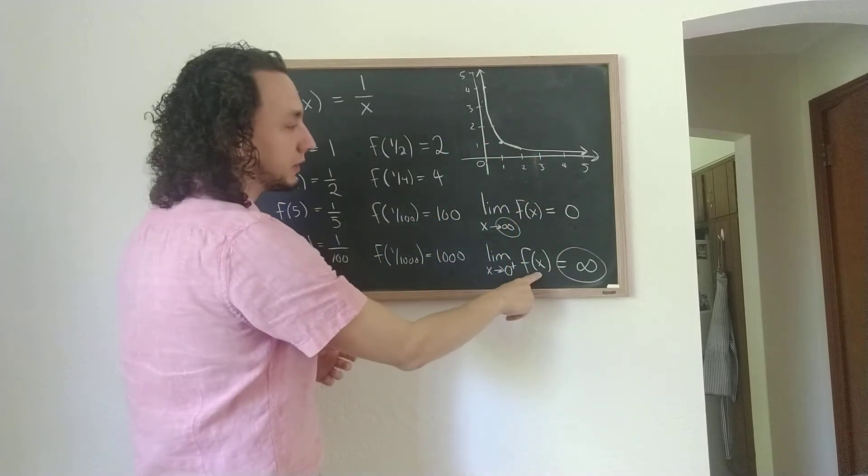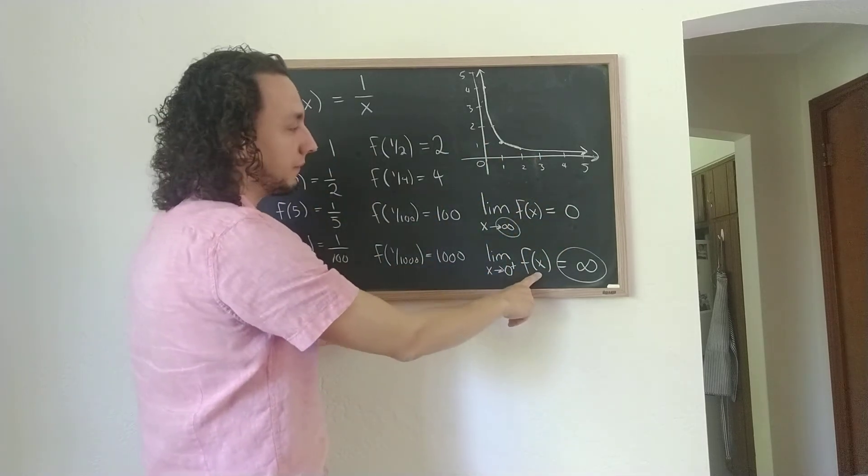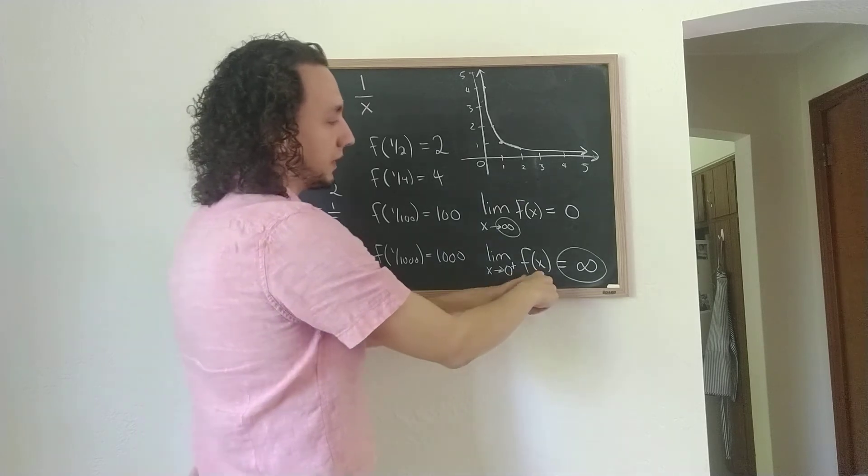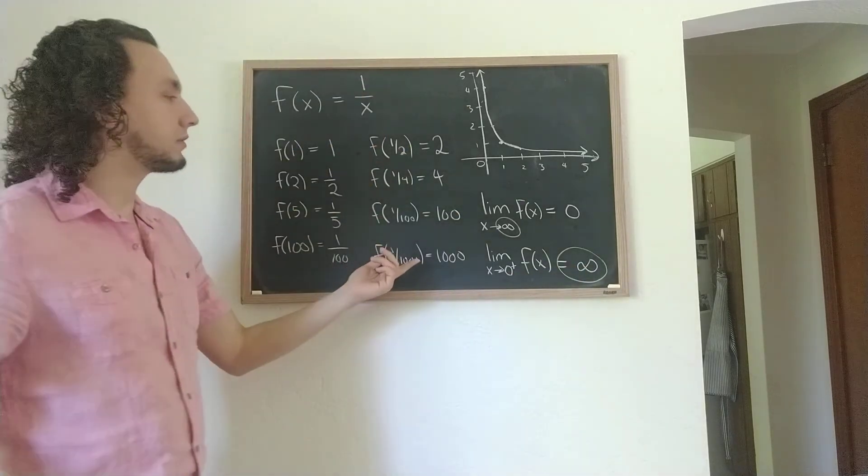So this one function sort of interfaces with infinity in two ways. As you put larger and larger numbers in that approach infinity in some sense, the output approaches 0. And on the flip side, as you put smaller and smaller positive numbers in, as they approach 0, the output approaches infinity. It's arbitrarily large.